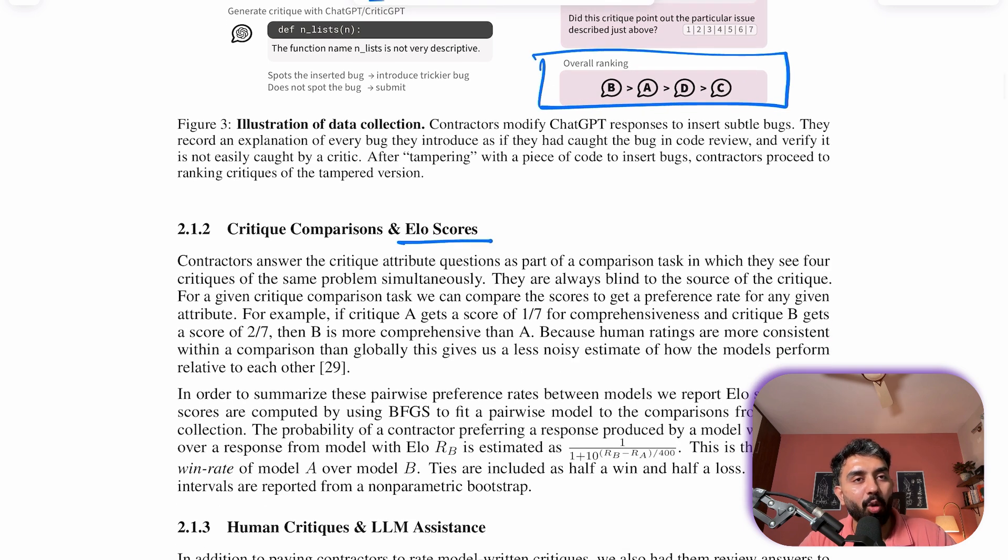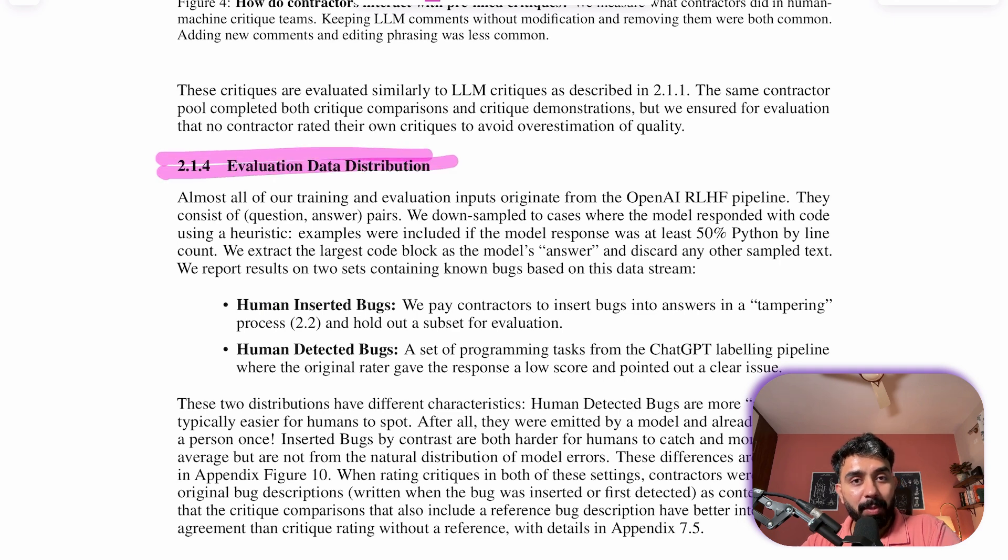The scores are then summarized using ELO scores which estimate the win rate of one model's critique over another's, and confidence intervals for these scores are provided using a non-parametric bootstrap method.